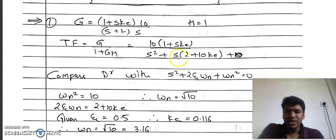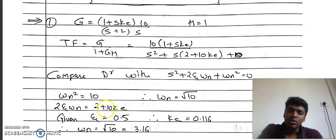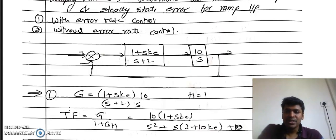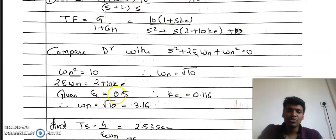Comparing with the standard quadratic equation: 10 = ωn², so ωn = √10 = 3.16. The coefficient of s gives 2 + 10ke = 2ζωn. The problem states damping ratio ζ = 0.5. Substituting the known values of ζ and ωn into 2ζωn = 2 + 10ke, we get ke = 0.116.